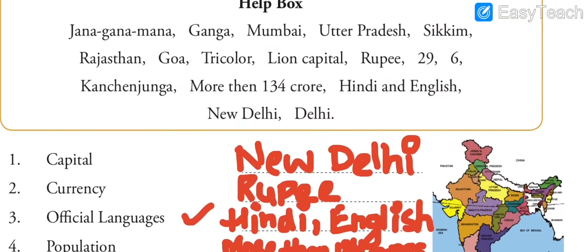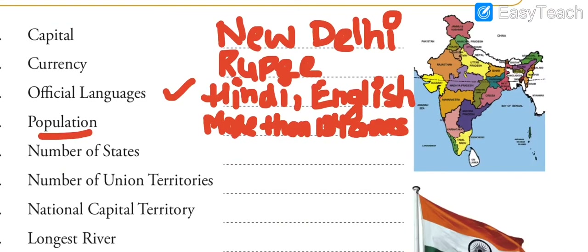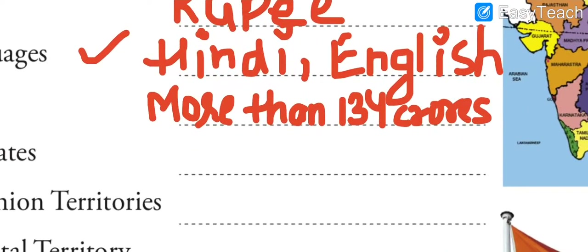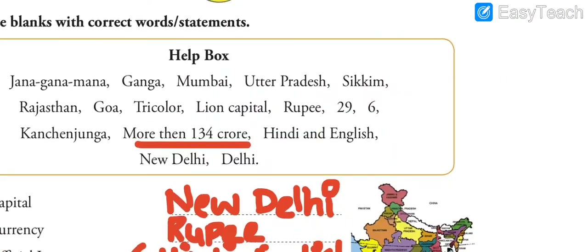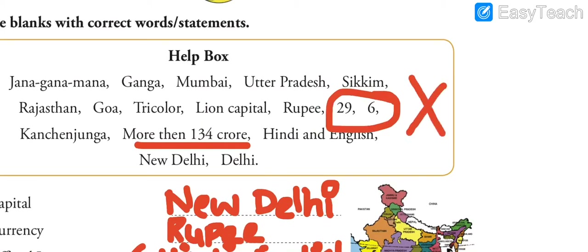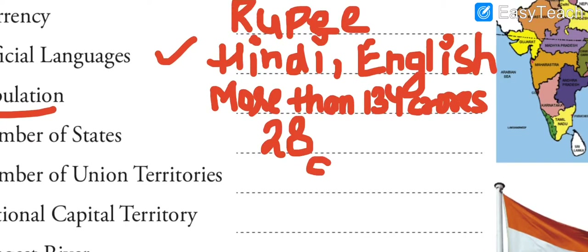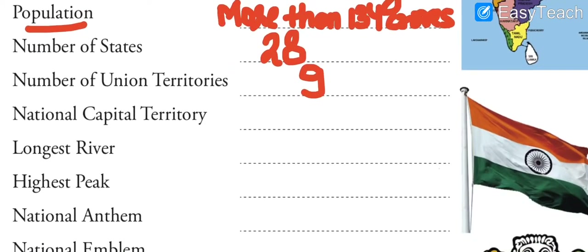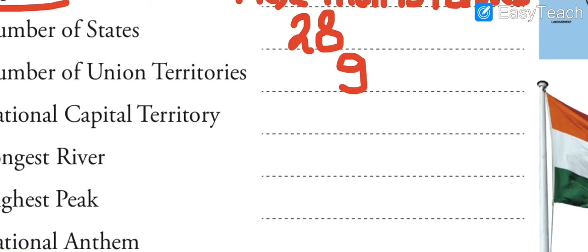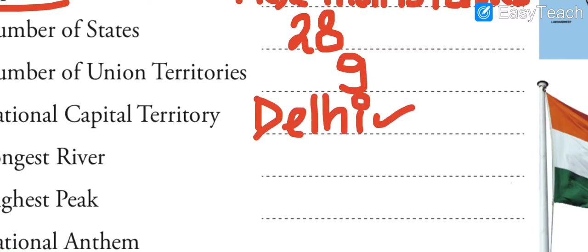Number of states in India at present is 28. You can see in the help box it's given 29 and 6, but this is wrong data - at present we have 28 states and 9 union territories. Since Delhi is our national capital, it is also our national capital territory because Delhi is included in union territories as well. So Delhi is our capital as well as national capital territory.